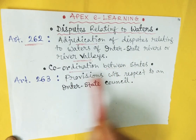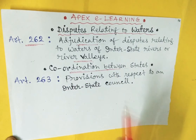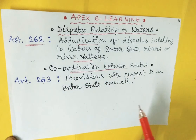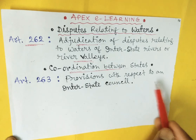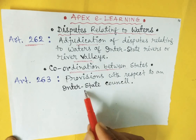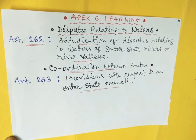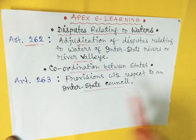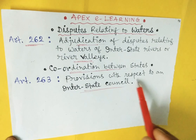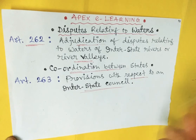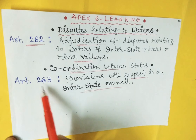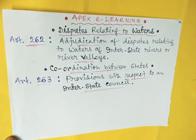We are going to talk about Article 263, which is called provisions with respect to an inter-state council.